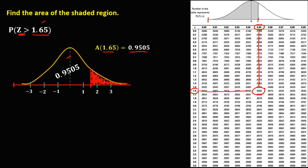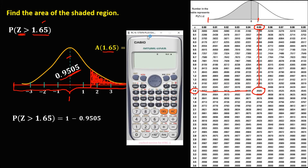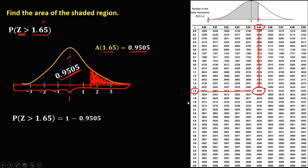To find the area of the shaded region, since the total area of the curve equals 1, the area for Z greater than 1.65 is 1 minus 0.9505, which equals 0.0495. So this is the area for Z greater than 1.65, or 4.95% in percent.